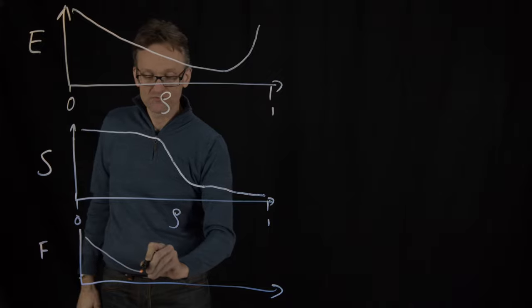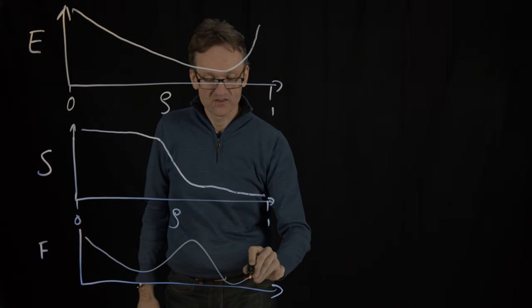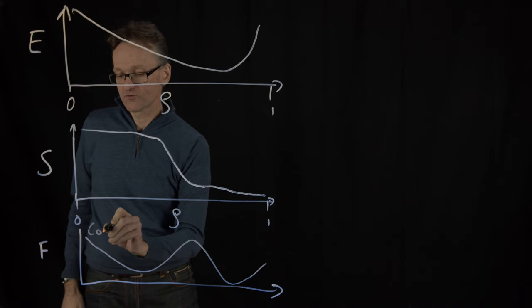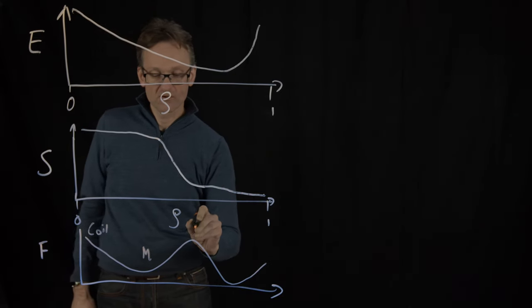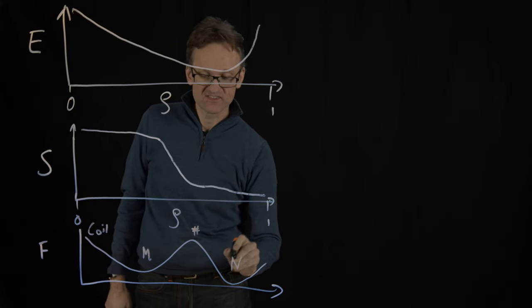So we start out here with coil or fully unfolded. We have the molten globular here, we have our folding barrier here, and we have the native state here.